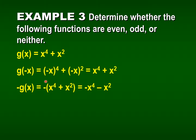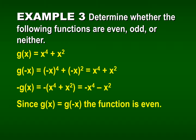Could it also be odd? To check, we multiply the entire function by negative 1: that gives negative x to the 4th minus x squared, which is not what we got when replacing x with negative x. So it cannot be both even and odd. Since f of negative x equals f of x, the function is even.